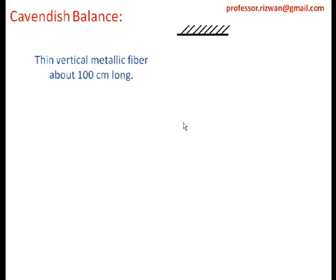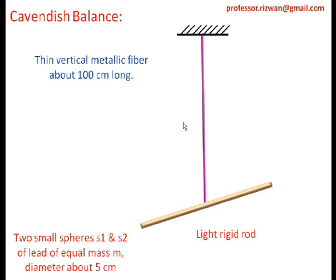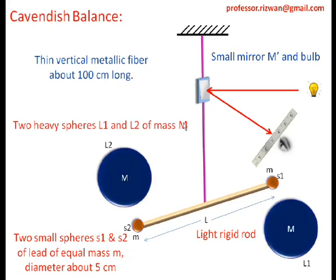The Cavendish balance has a thin vertical metallic fiber wire about 100 centimeters long. One end of the wire is connected to a rigid support and the other end is connected to a light rigid rod. Two small spheres S1 and S2 are attached to this rod, with rod length L. A small mirror is attached to the fiber wire along with a bulb arrangement, so initial readings can be taken. Two heavy spheres L1 and L2 of mass M are kept near the small spheres S1 and S2.